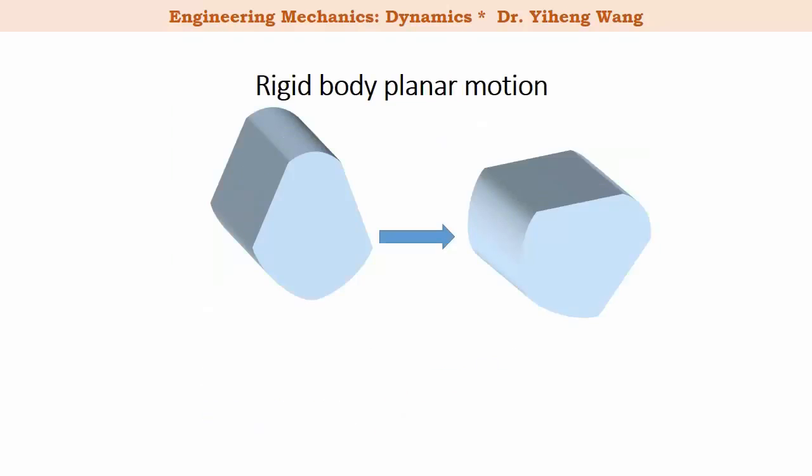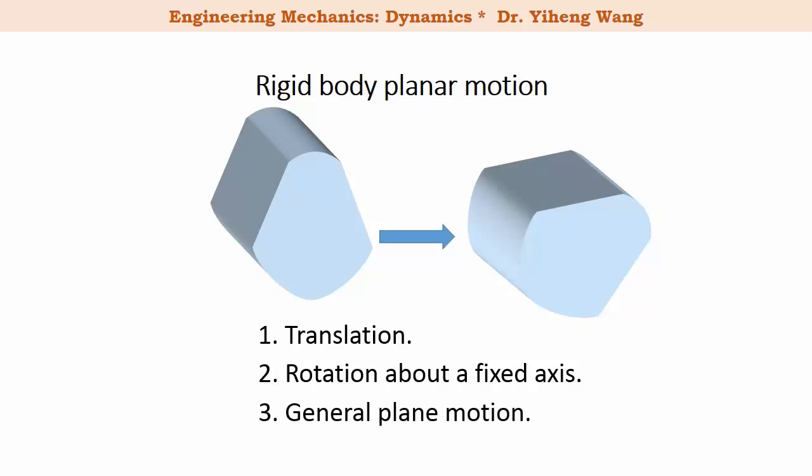There are three types of rigid body planar motion: translation, rotation about a fixed axis, and lastly the general plane motion, which is simply when the rigid body is undergoing both translation and rotation simultaneously.